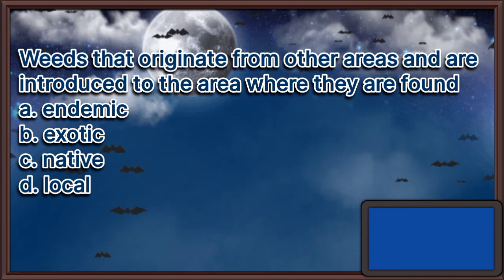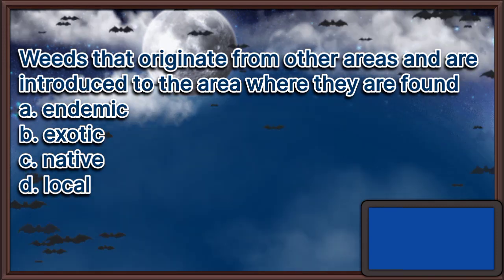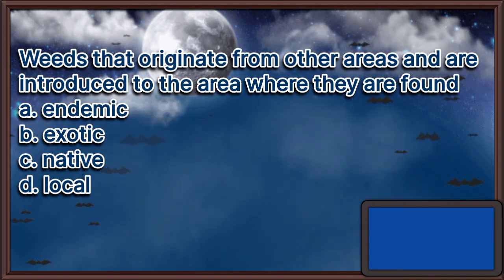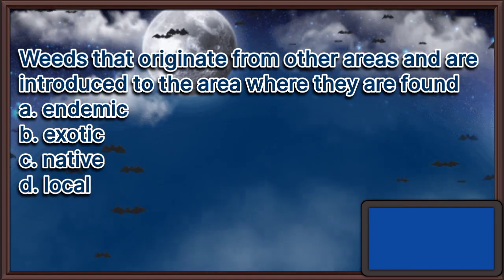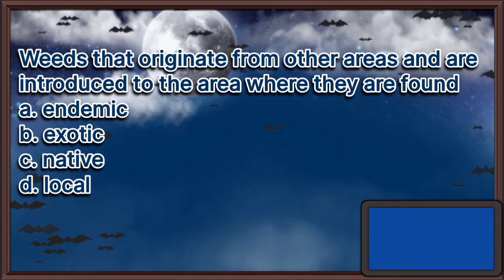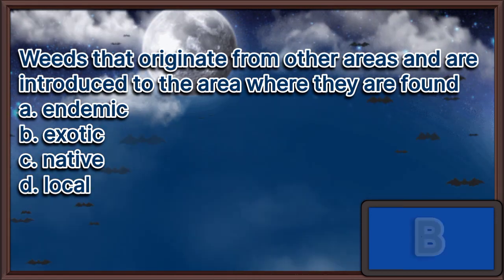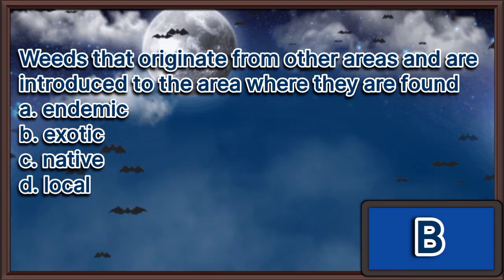Weeds that originate from other areas and are introduced to the area where they are found. A. Endemic. B. Exotic. C. Native. D. Local. The answer is letter B.